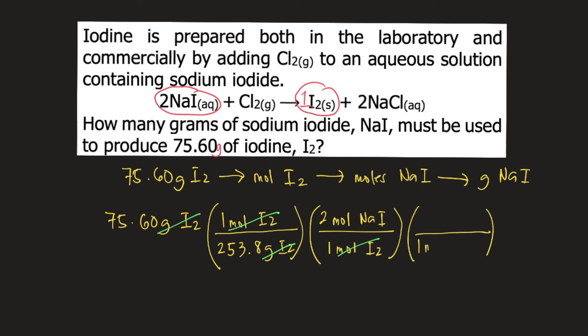So the molar mass of NaI is 149.89 grams of NaI per mole of NaI. So the moles of NaI will cancel. We are left with grams of NaI as the unit.